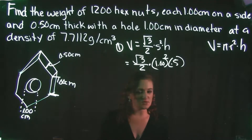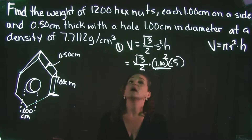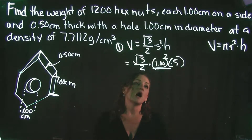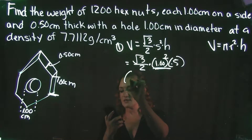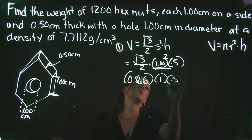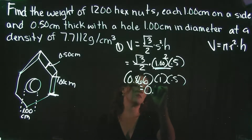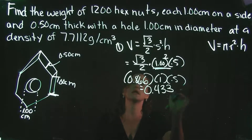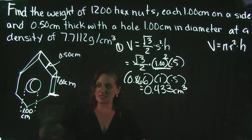Following order of operations, we handle exponents first: 1 squared is 1. Then we calculate the square root of 3 divided by 2, which is approximately 0.866. Multiplying 0.866 times 1 times 0.5 gives us 0.433 cubic centimeters — the volume of the entire hexagonal prism.